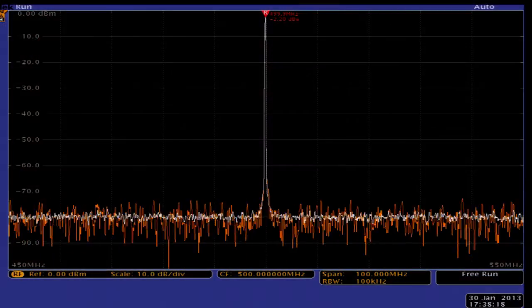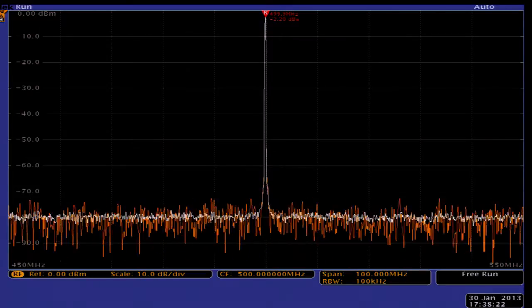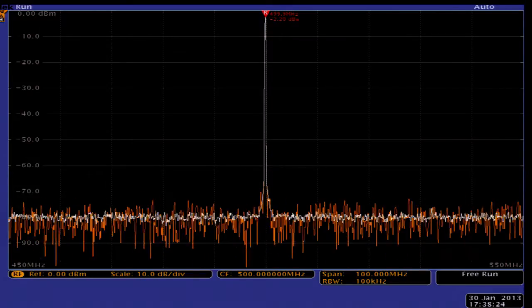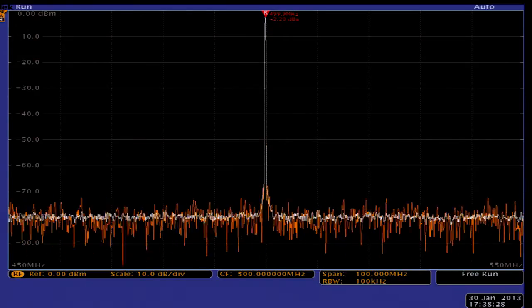Here is the integrated spectrum analyzer in the MDO4000 viewing the same 500 MHz carrier as before. We start with a 100 MHz span and then reduce the span to 10 MHz.